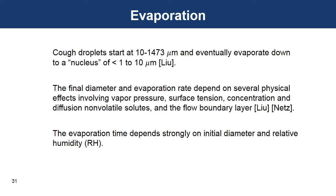Evaporation appears to be most important for cough droplets, which are the larger ones. They start at a diameter of between 10 and 1400 microns, and then eventually evaporate down to a nucleus that may or may not be solid, and has a diameter of between 1 and 10 microns. The physics and chemistry of this evaporation process are quite complicated. You could consult the references given by Lue or NETS for the details.